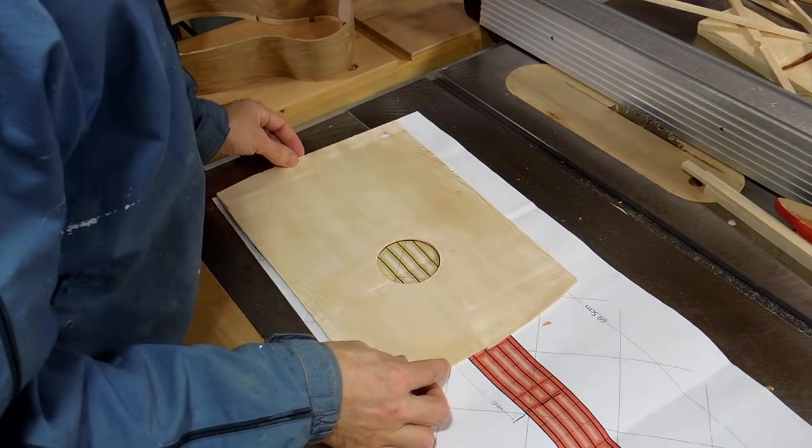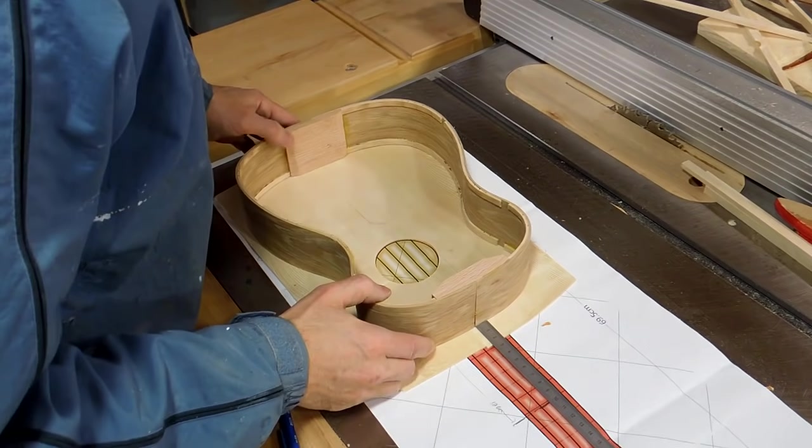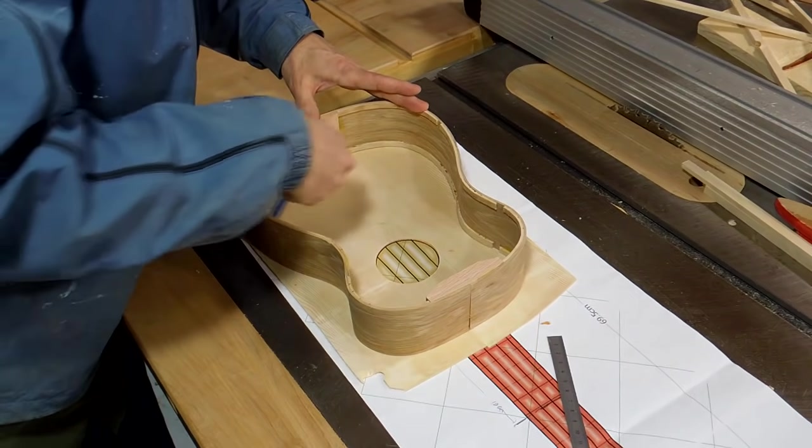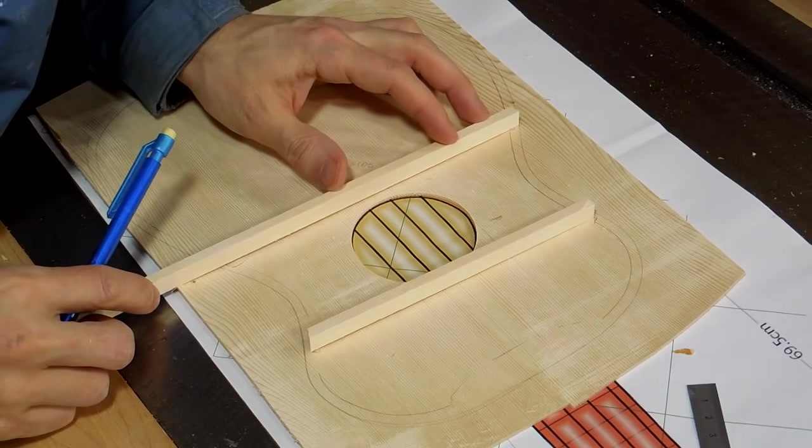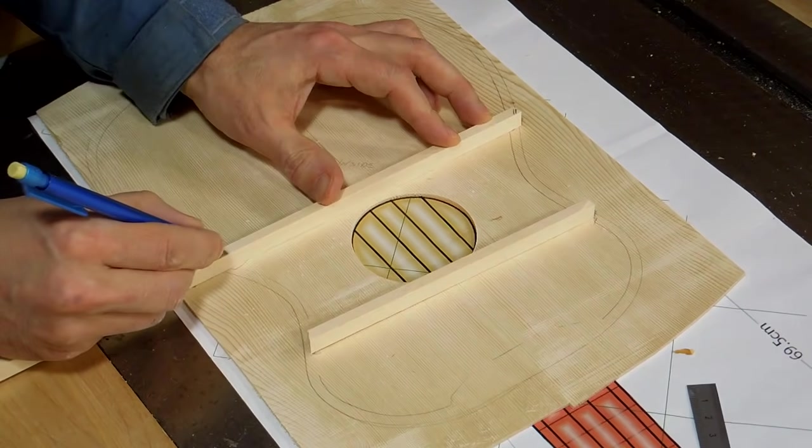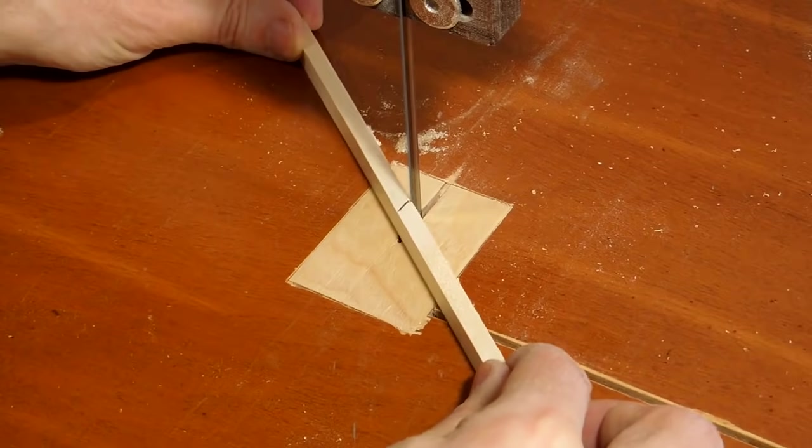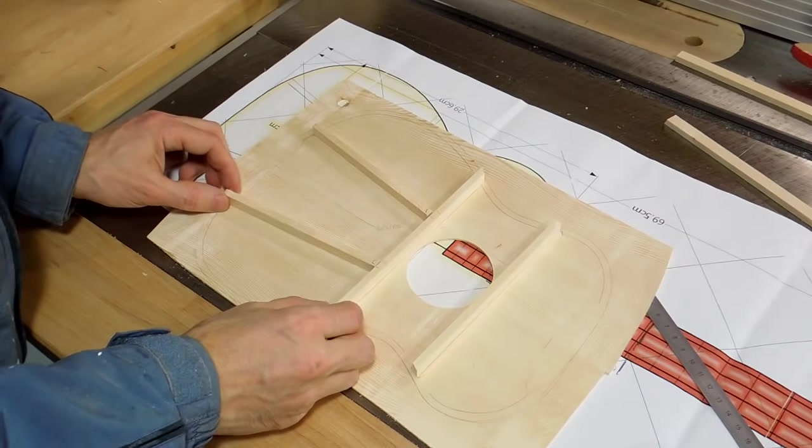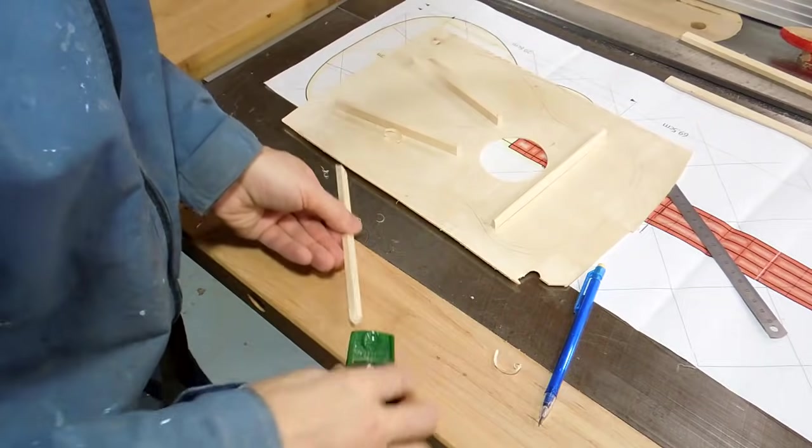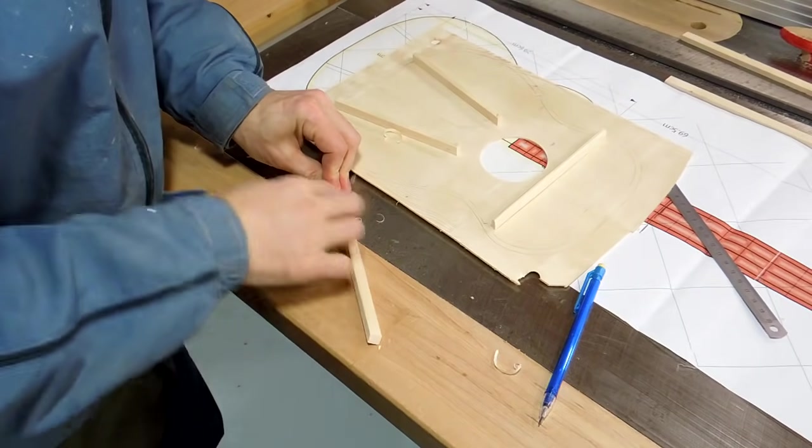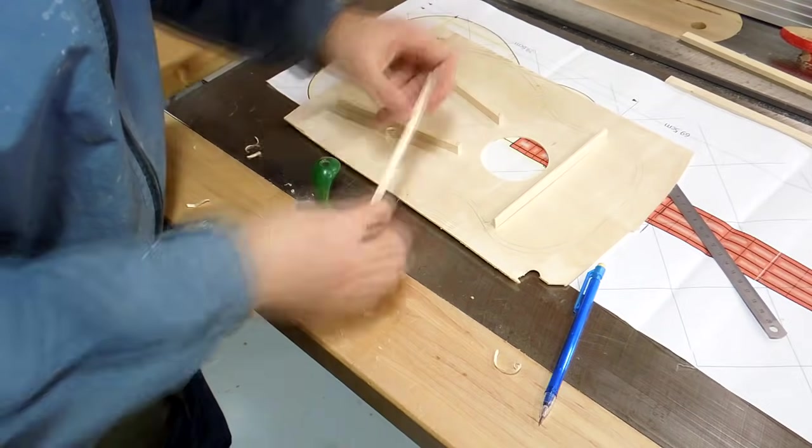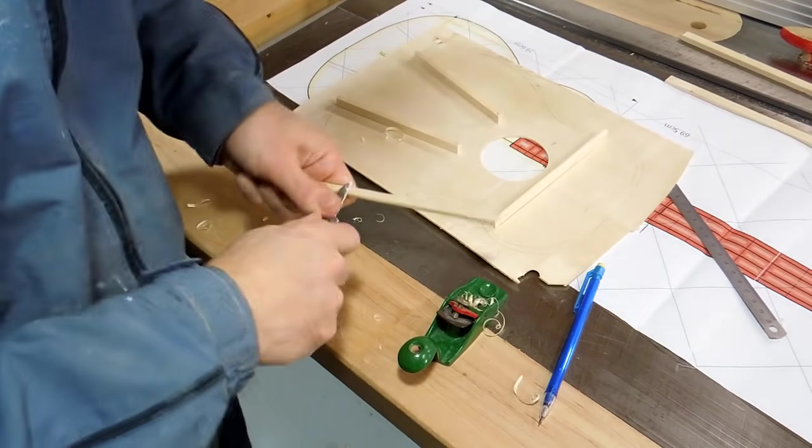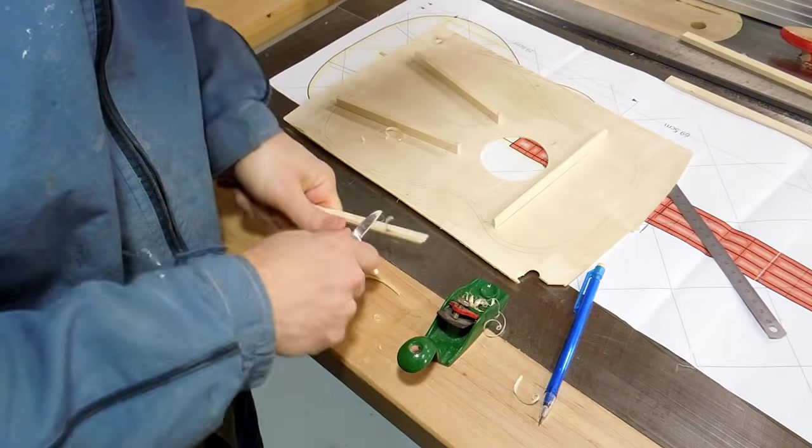Now using my one-to-one printout to figure out how the soundboard is going to line up with the body. These are the ribs for reinforcing the soundboard. I'm carving these down a little bit just to cut down on weight, which should brighten the sound a bit.